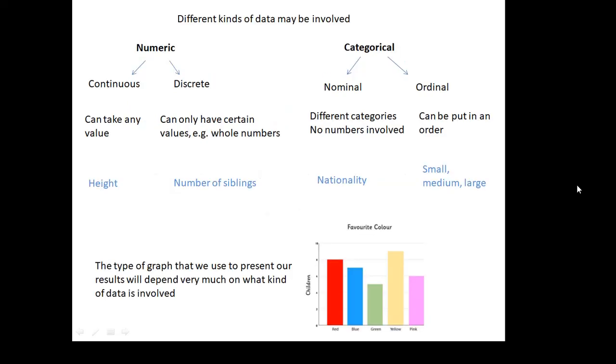Different kinds of data may be involved, and we can categorize it. It may be numeric, in other words, involve numbers, or it may be categorical. It doesn't involve numbers. Numeric data can be continuous or discrete. If it's continuous, it can take any value, for example, your height. You might be 1.73 meters, or you might be 1.89 meters tall. Discrete can only have certain values, for example, whole numbers. How many brothers and sisters have you got? You've got two or three or four. You can't have 3.6 brothers and sisters. It can only have certain values. It's discrete.